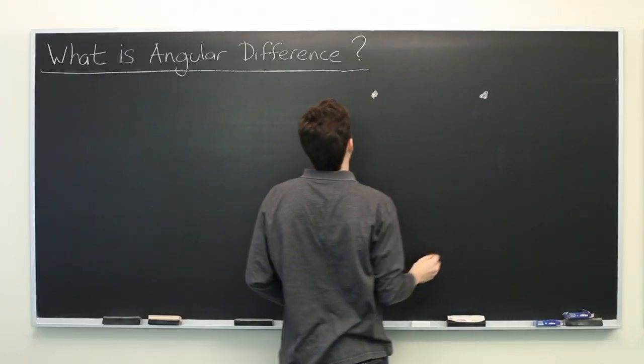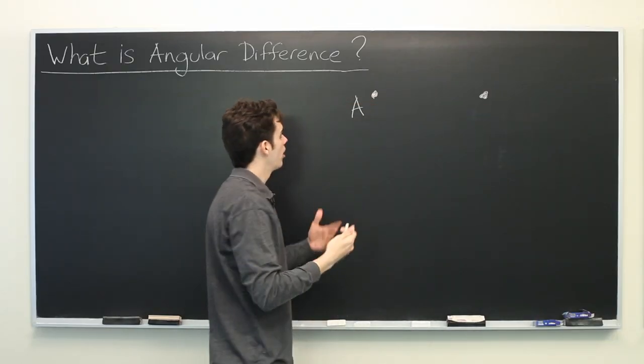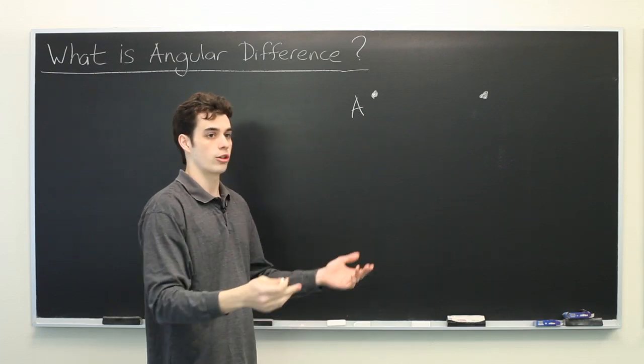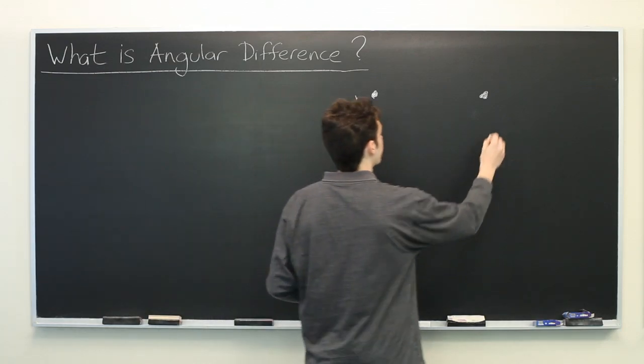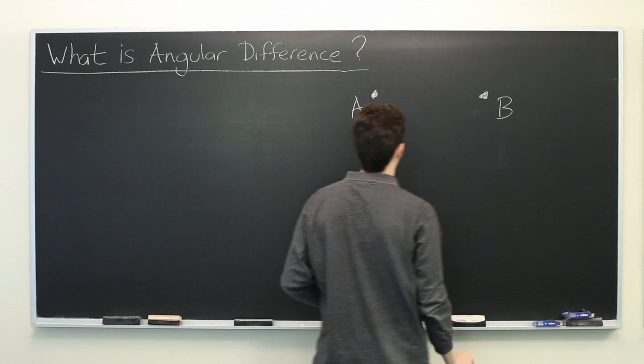So suppose that you have two objects, A and B. You might think of them as stars or chairs in a room or anything really. And you have some observer.